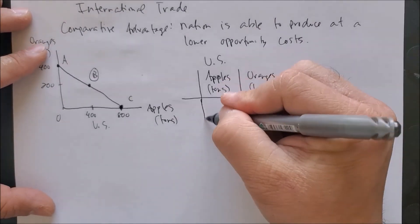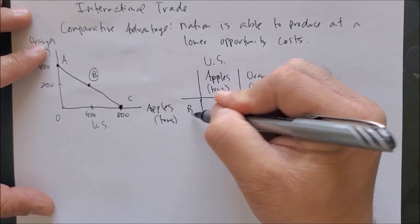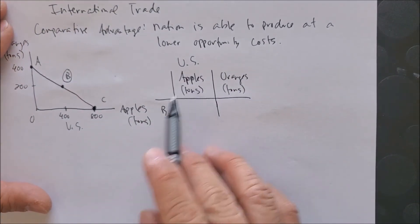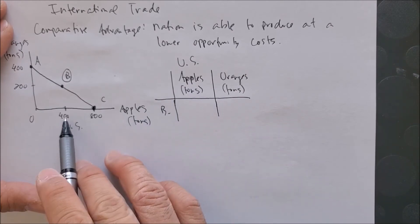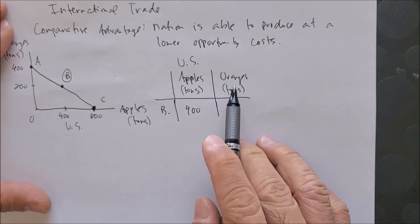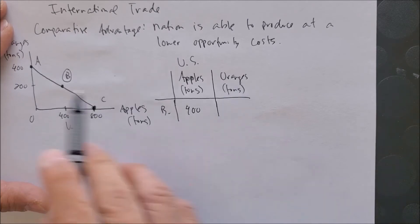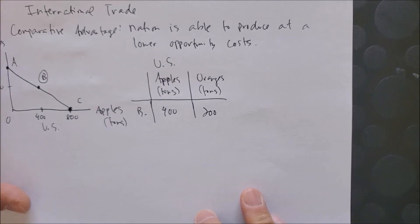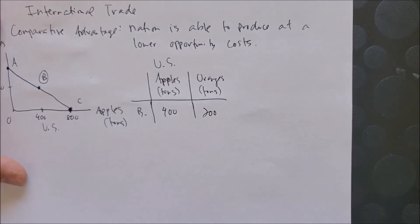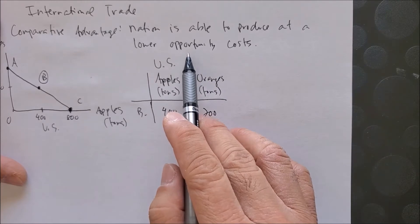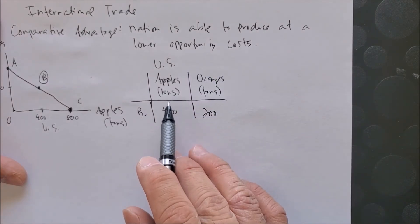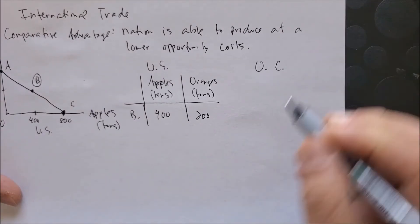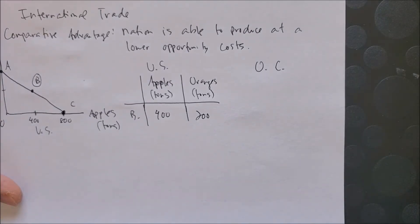We're going to focus on point B. At point B, the x-axis value for apples is 400 and the y-axis value for oranges is 200. We now want to know what is the United States' opportunity cost of one apple relative to one orange, so we need to calculate that.